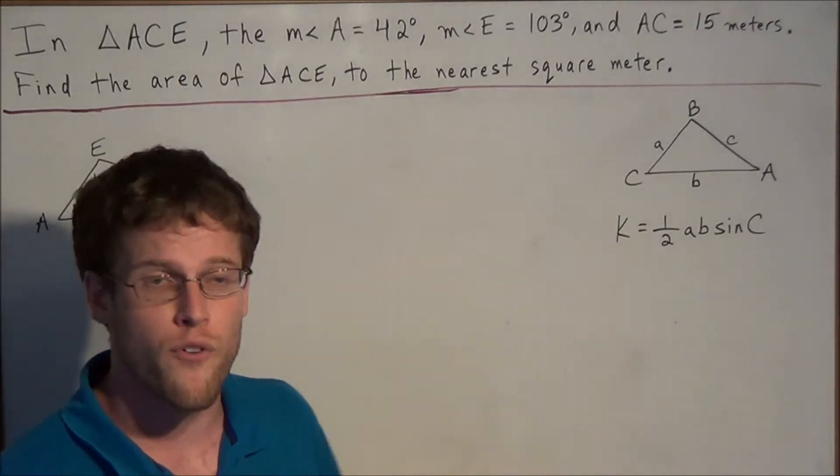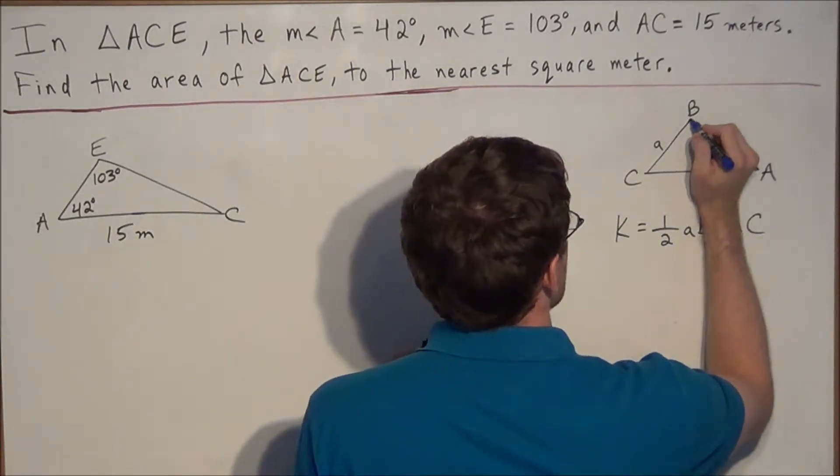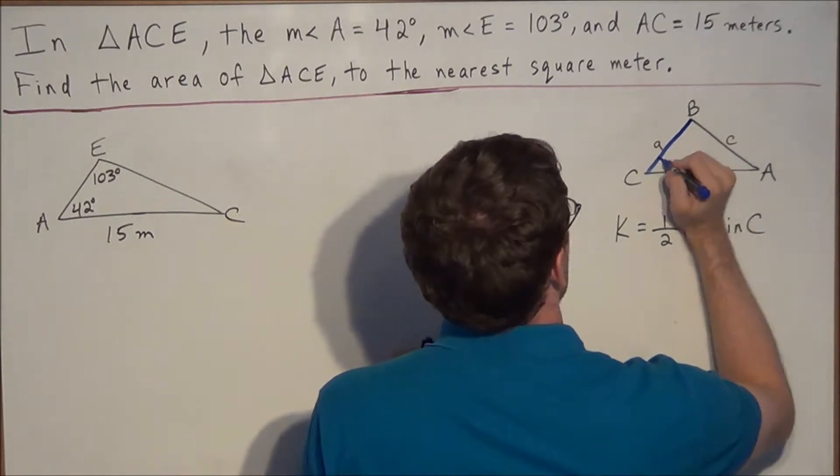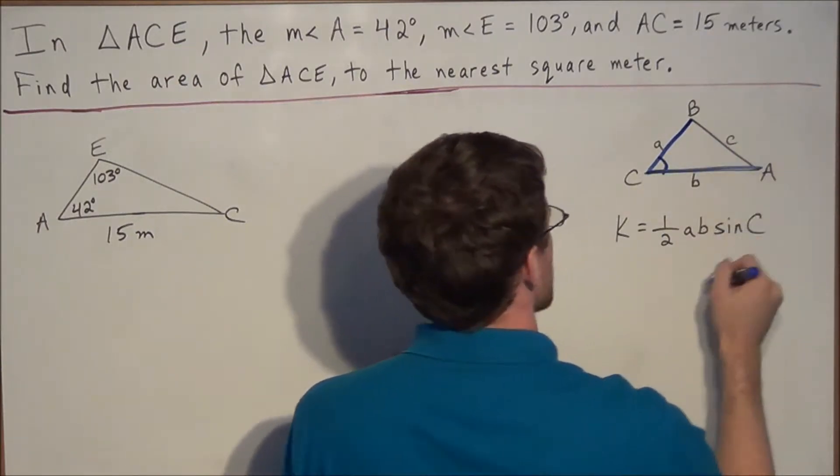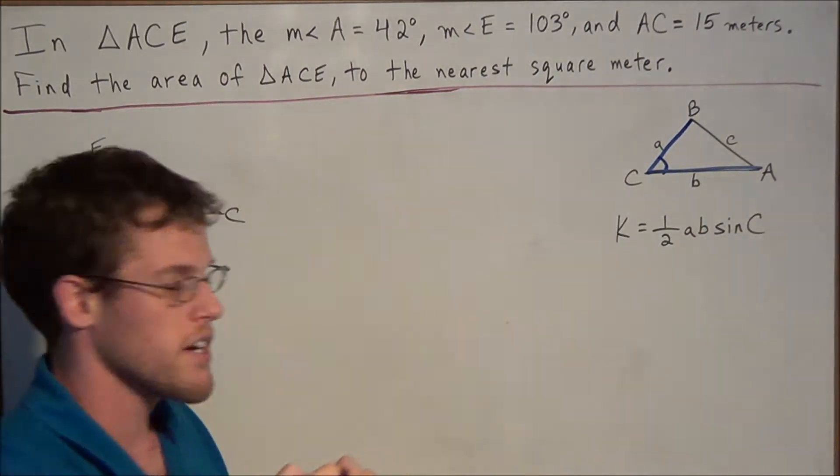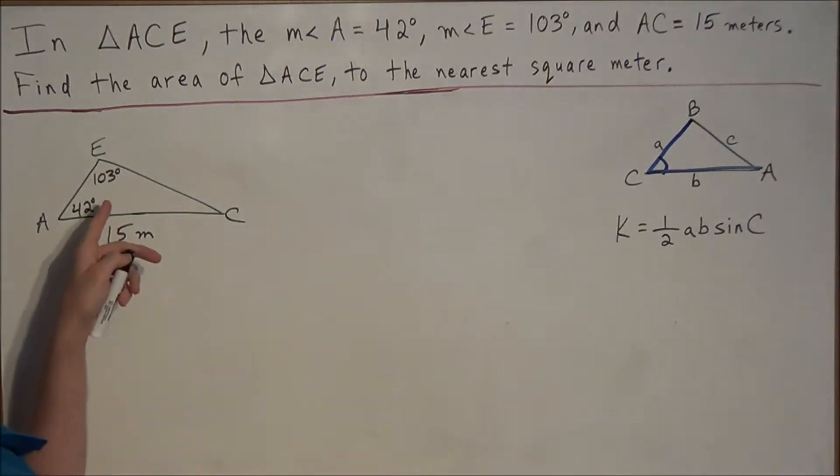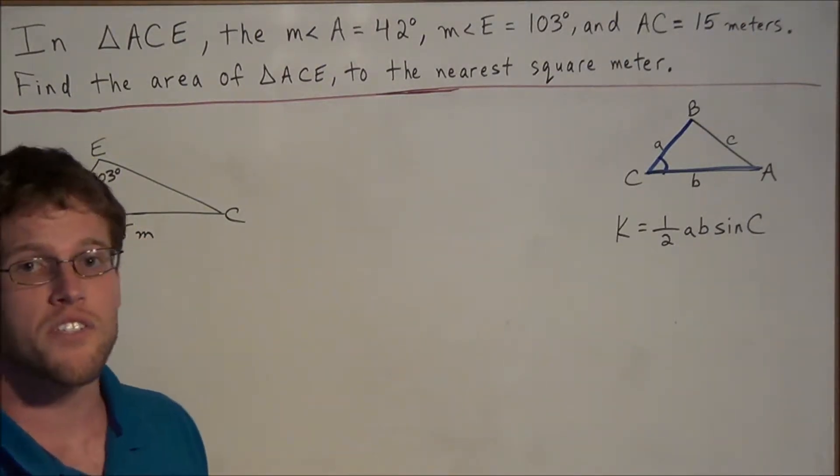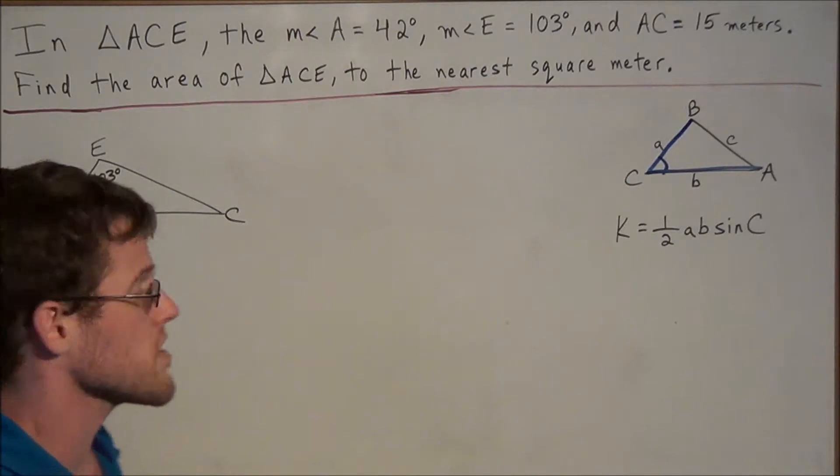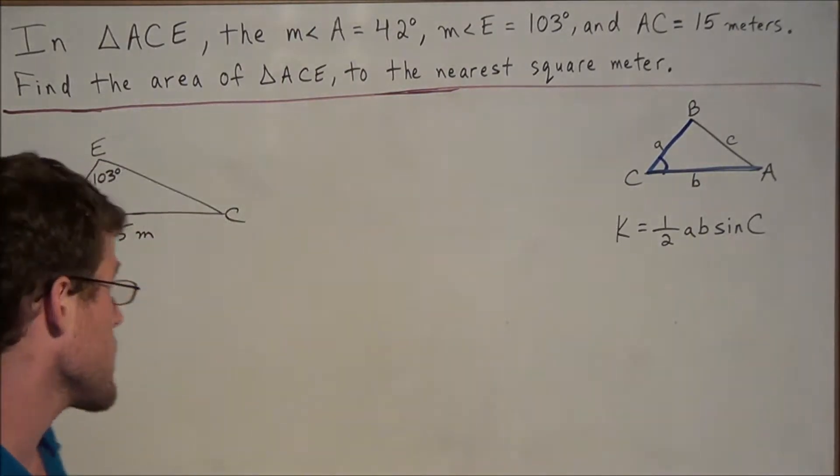So that tells us what we're looking for in this problem is we're looking for a connected side, angle, and side. Because notice we're using side A, angle C, and side B. So we need to find a side, an angle, and a side. But here we have two of the angles, and we have one of the sides. So the first task is to find one of the missing sides of this triangle, and to do so we're going to use the law of sines.